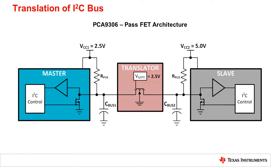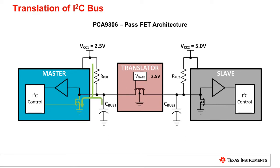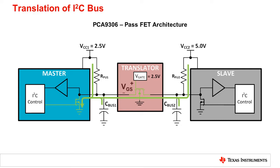Let's take the instance where the master pulls low. As side 1 starts to pull low, the CBUS is getting discharged, and we start to produce a state where the voltage differential is created between V-gate, which is set to 2.5 volts, and V-source, which is the bus voltage. As VGS increases past the threshold voltage of the pass-FET, which is typically 0.7 volts, it will quickly turn on. When the master pulls low, the pass-FET will turn on, and both sides 1 and 2 are low through the pass-FET.